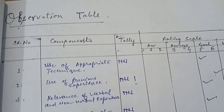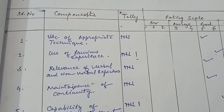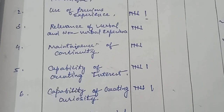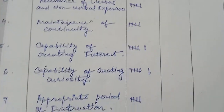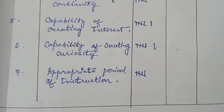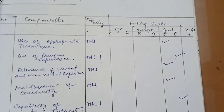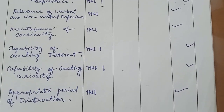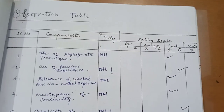The last section is the observation table of the introductory skill. The components are: use of techniques, use of previous experiences, relevance of verbal and non-verbal behavior, maintenance of continuity, capability of creating interest, capability of arousing curiosity, and appropriate period of illustration. A tally mark shows how you have performed each component of the introductory skill.